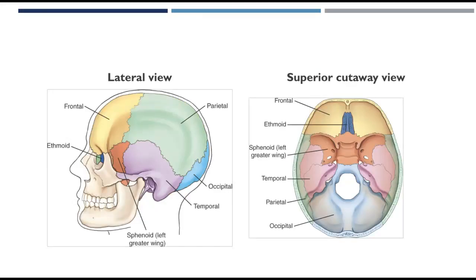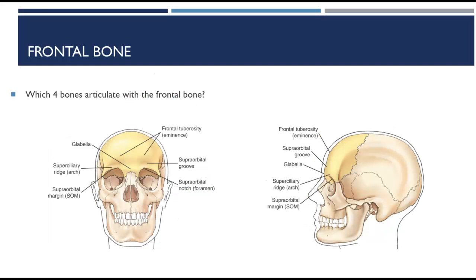Here are a few more color-coded pictures. The one on the right-hand side is a superior cutaway view, which shows the floor of the cranium pretty well. Starting with the frontal bone — the frontal bone articulates with four cranial bones: the right and left parietals, the sphenoid, and the ethmoid bone.